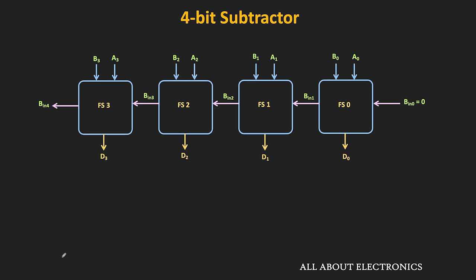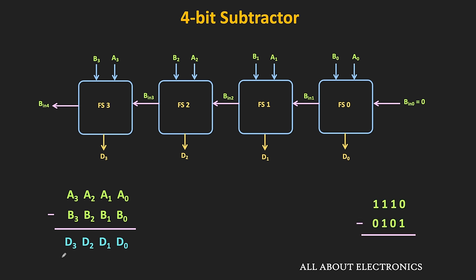As you can see, here the 4 subtractors are connected in parallel. The borrow output from one subtractor is given as an input to the next subtractor. This circuit performs A minus B, where both A and B are 4-bit numbers. Let's say the two numbers are 1110 and 0101. For the first full subtractor block, A0 is equal to 0, B0 is equal to 1, and the incoming borrow is equal to 0. So 0 minus 1 equals 1, and the output borrow will also be equal to 1.